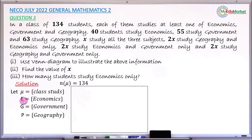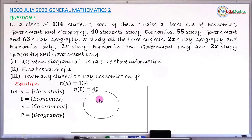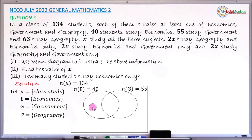Starting with set E for students that study economics — everything inside this circle represents those students, and there are 40 of them. I'll draw the second circle to represent students that study government, overlapping with the first one. The number of students studying government is 55. Now I'll draw the third circle, also overlapping the other two, representing students that study geography. The number of students studying geography is 63.